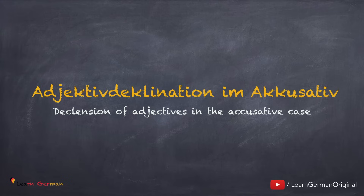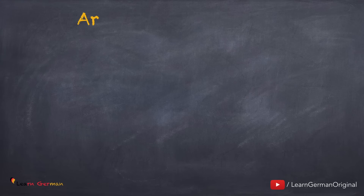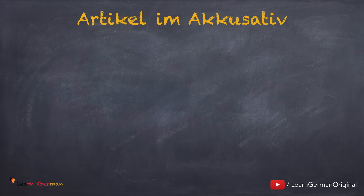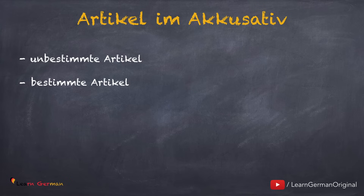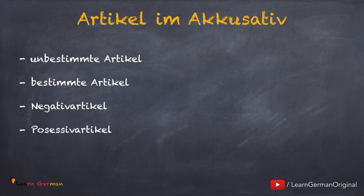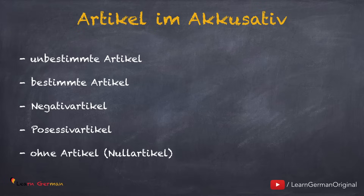Wir lernen Adjektivendungen im Akkusativ mit folgenden Artikeln: unbestimmte Artikel, bestimmte Artikel, Negativartikel, Possessivartikel und Nullartikel oder ohne Artikel.